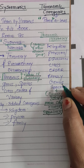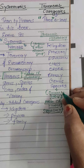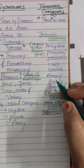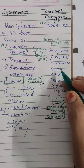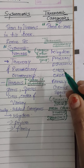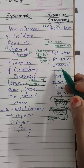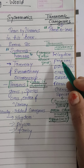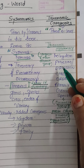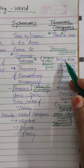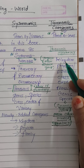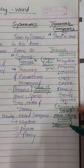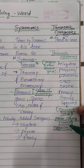Many species are placed in one genus, and many genera are placed in a family. Many families are placed in an order, order is placed in a class, class is placed in a phylum or division, and phylum is placed in a kingdom. This is how all taxonomic categories are arranged in a hierarchical manner.